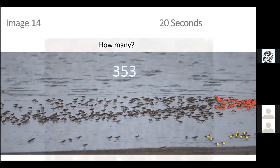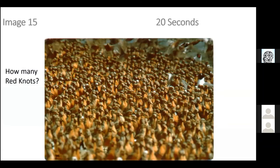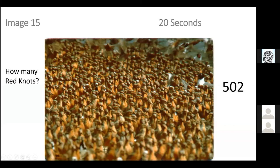Moving on to image 15 — how many red knots are in this image? About 15 seconds. There are 502 red knots. You may have also noticed there are not only red knots — there are some ruddy turnstones tucked in with a white and black mottled pattern on their face, and also some laughing gulls.